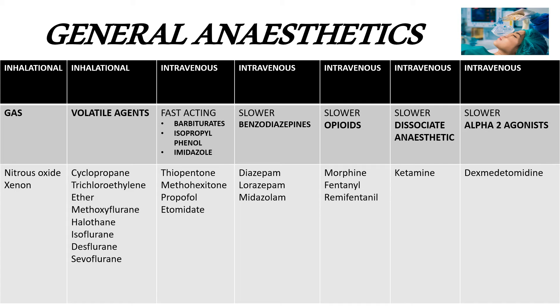Among the intravenous agents, they are broadly classified into fast-acting and slower-acting. Fast-acting means the onset of action is as short as 45 seconds to one minute, equivalent to one arm-brain circulation time — meaning the time it takes for a drug given intravenously at the arm to travel to the brain. The fast-acting classes include barbiturates, examples being thiopentone sodium and methohexitone sodium.